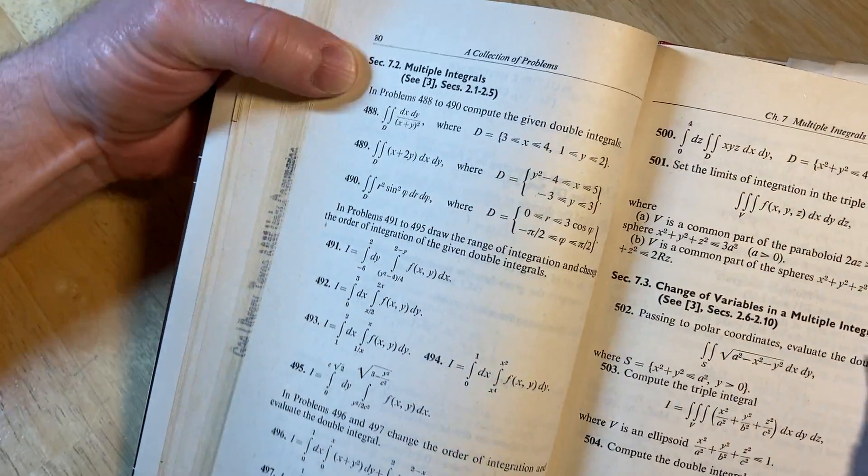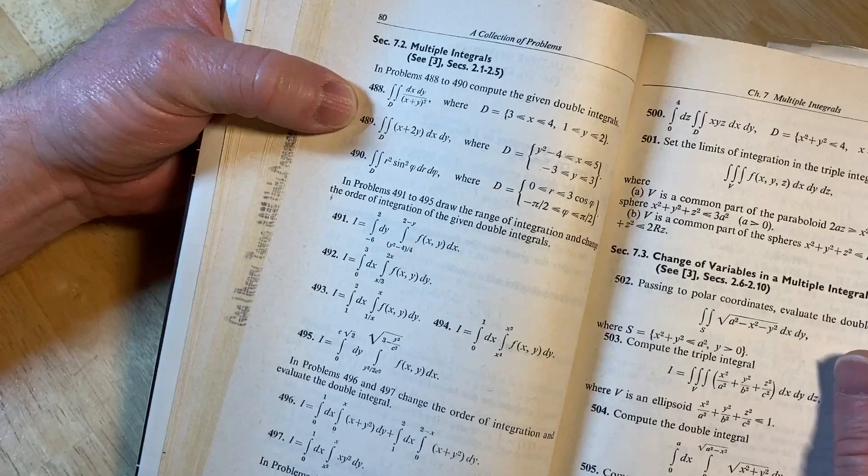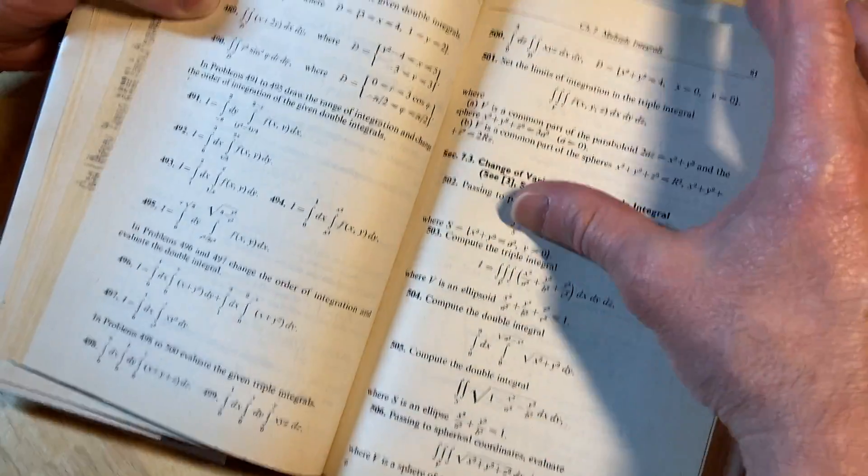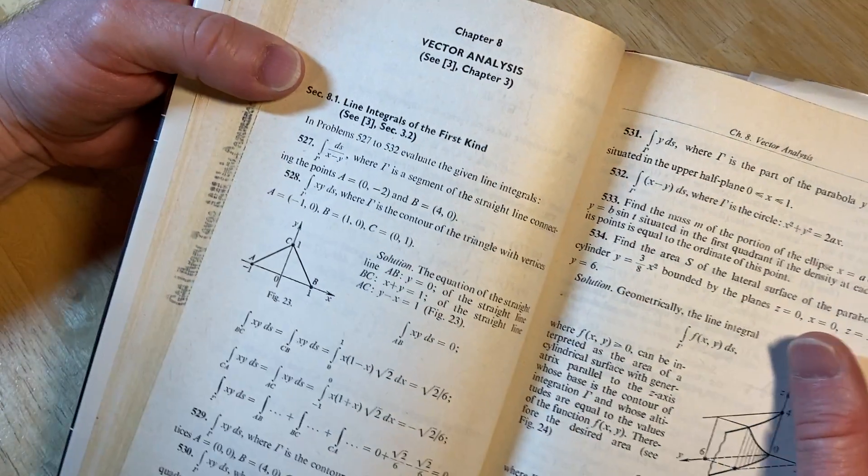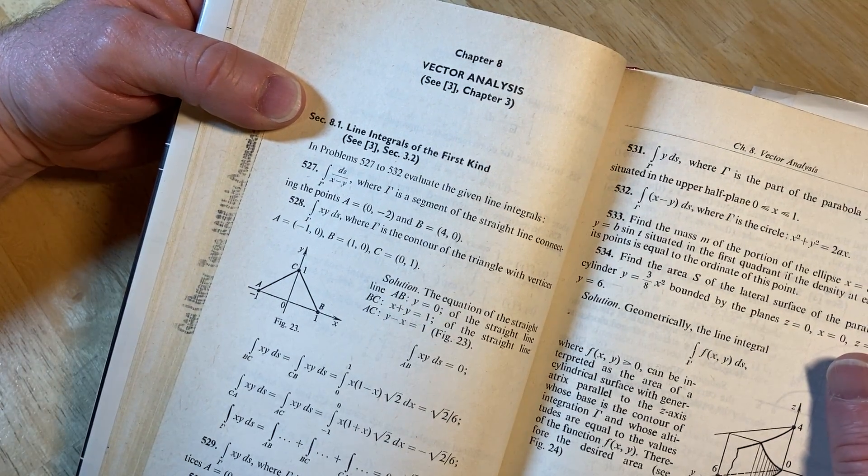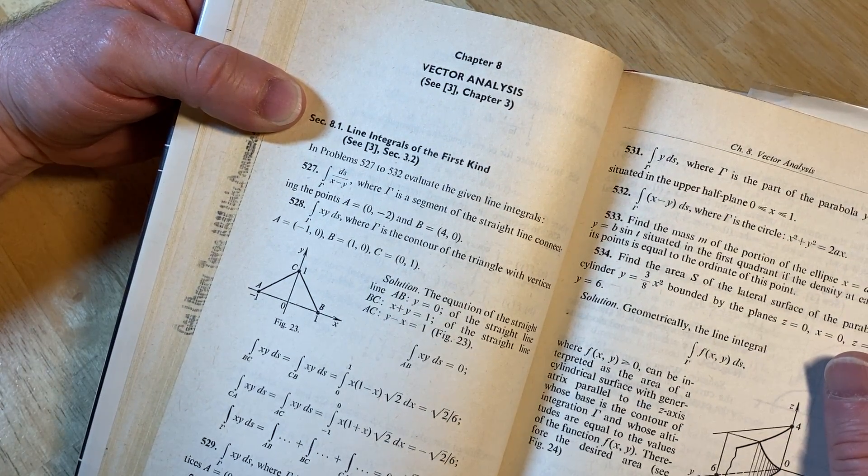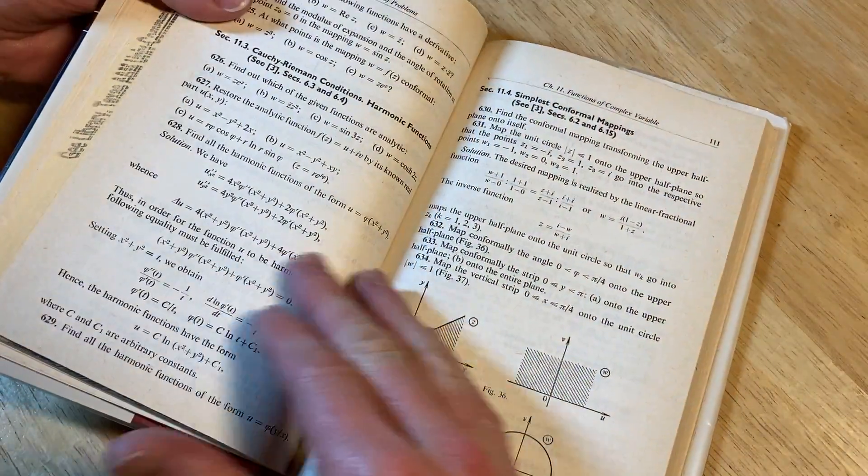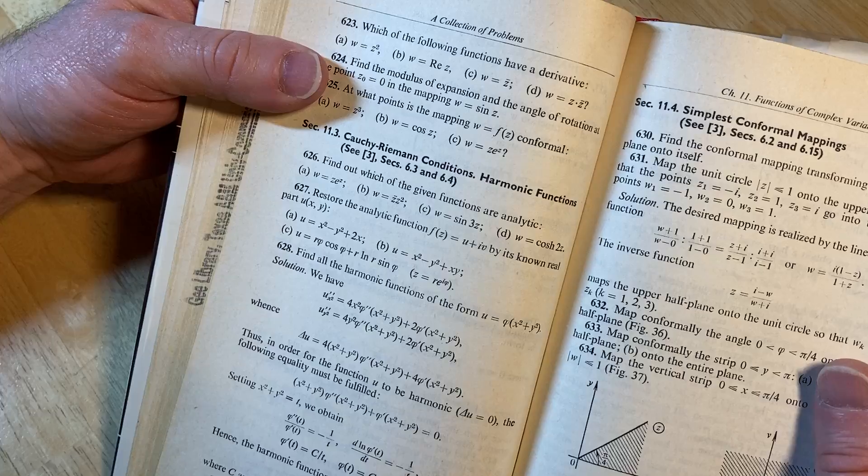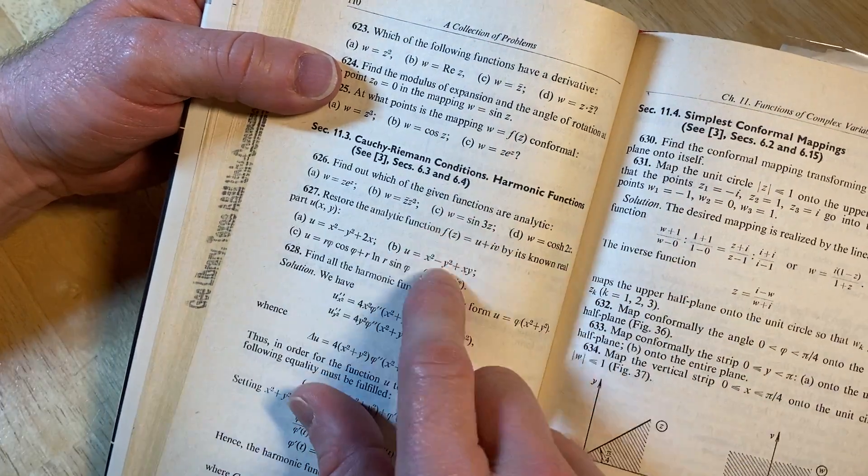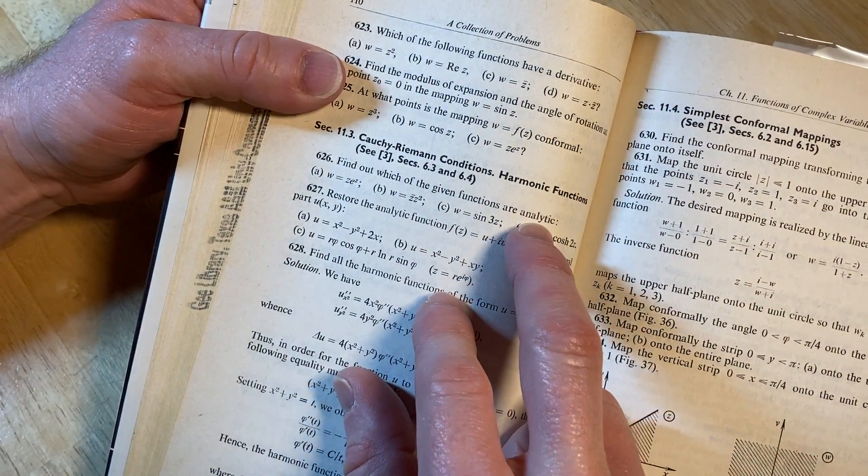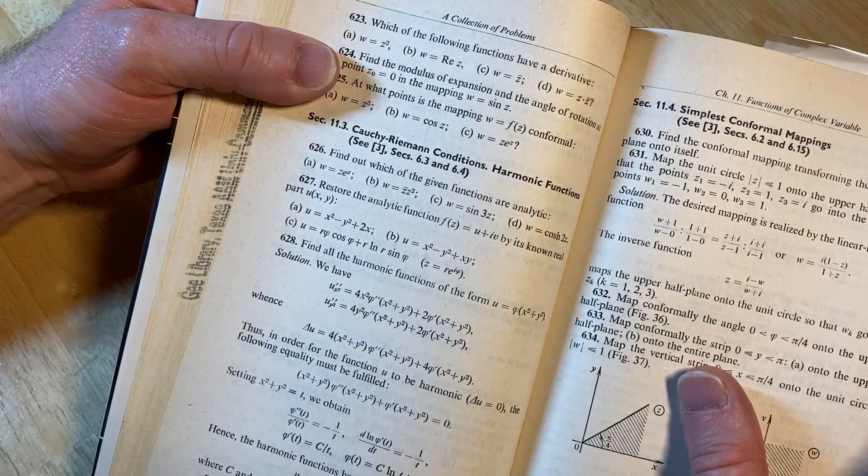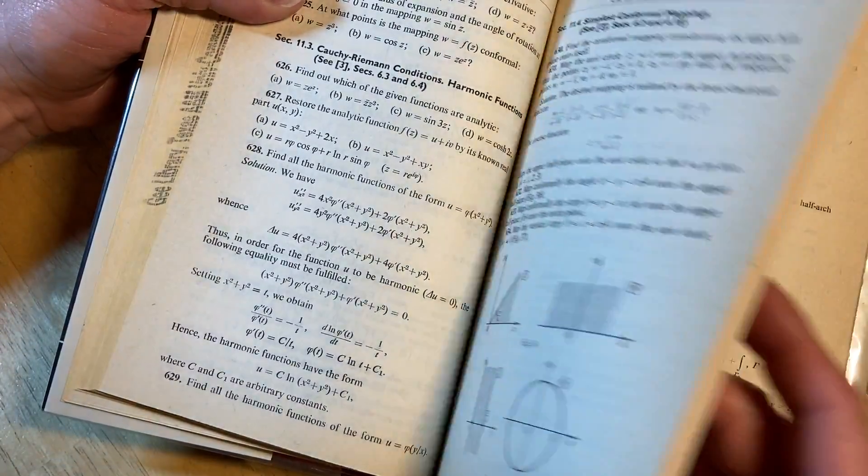Multiple integrals. Change of variables in a multiple integral. Vector analysis. Line integrals of the first kind. Cool. Cauchy-Riemann conditions. Harmonic functions. Yeah, you see this in like a complex variables course. That's where you see stuff like this. Yep.